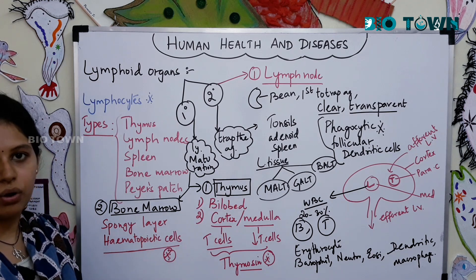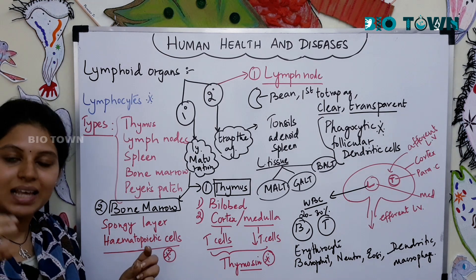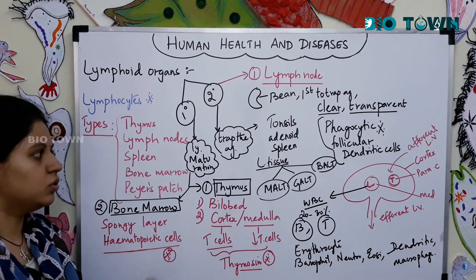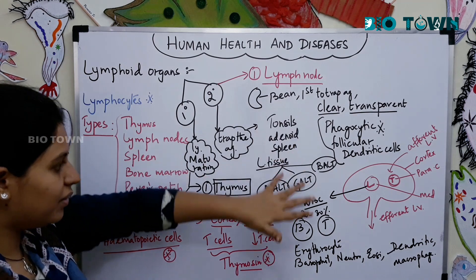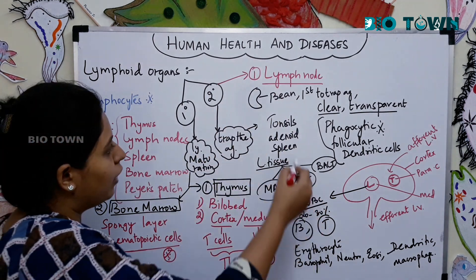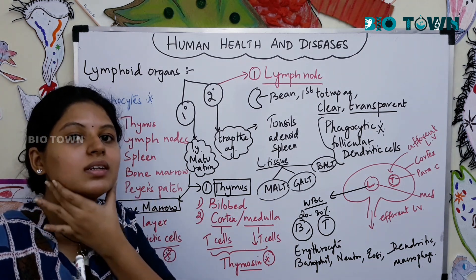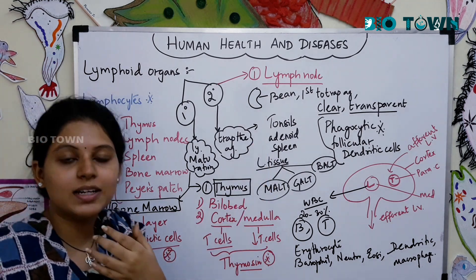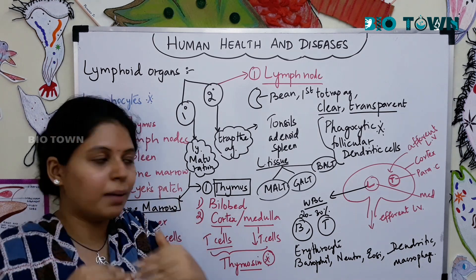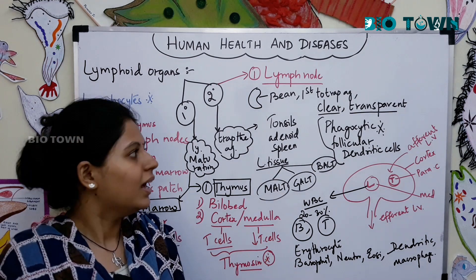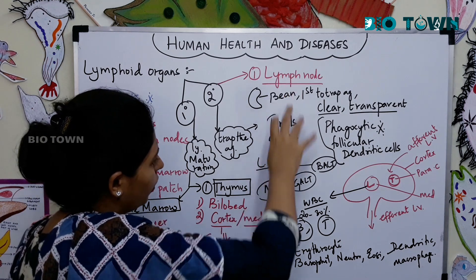Secondary lymphoid organs help antibodies and white blood cells trap antigens. These include lymph nodes, tonsils, adenoids, and the spleen. Tonsils are located in the throat region. Adenoids are present on the roof of the upper palate.